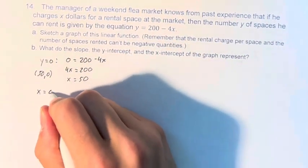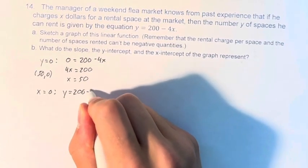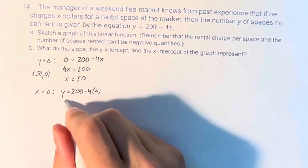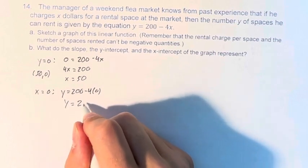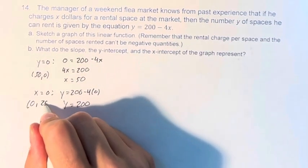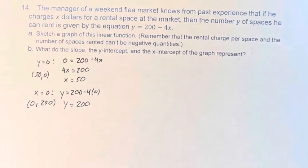And when x equals 0, y equals 200 minus 4 times 0. 4 times 0 is 0, so this is just y equals 200. And therefore the point (0, 200) is on the graph as well.